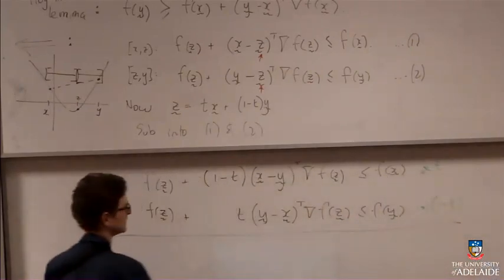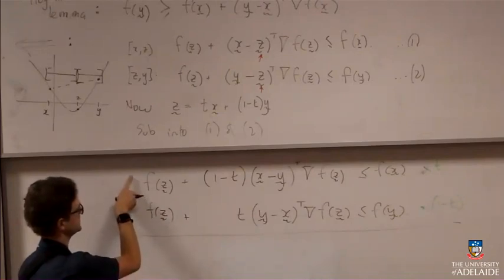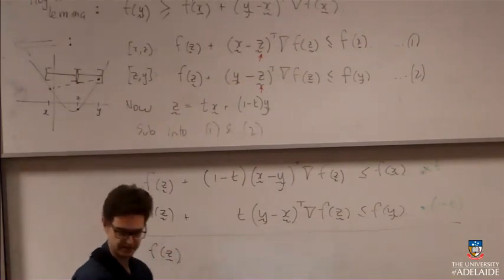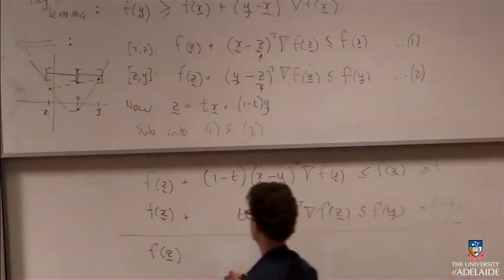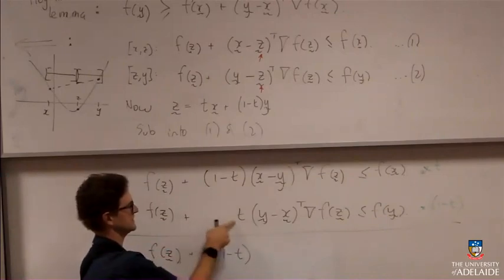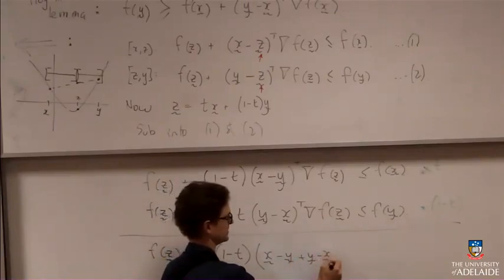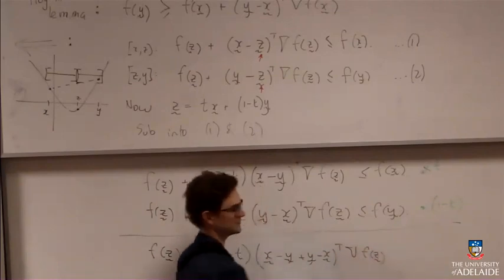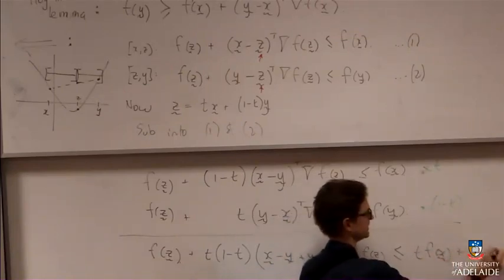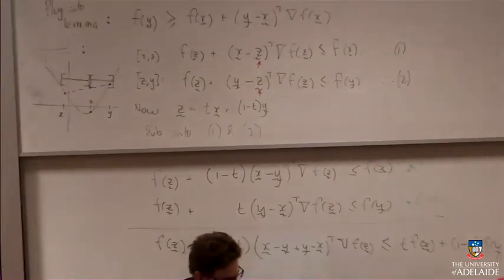And then I can add these things and that term in the middle will disappear. So if I do that, t times f of z plus 1 minus t times f of z is actually going to leave me with just an f of z. t times 1 minus t times f of z will disappear. This thing ends up being, I'll get the same t 1 minus t. And I'm going to get x minus y plus y minus x transpose gradient f of z. And then on the right-hand side, I'm going to get t f of x plus 1 minus t f of y. Sorry, it's run off the board. People at home, let's zoom out a tiny bit and you'll be able to see. There you go.